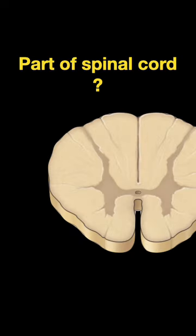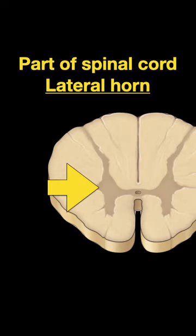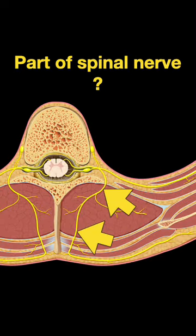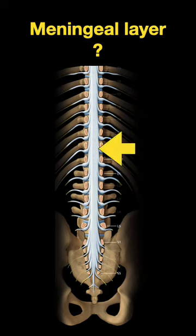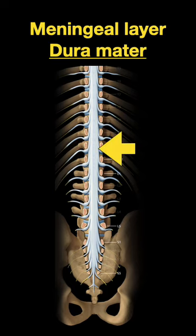How about this one? What part of a spinal cord is that? Lateral horn gray matter. What part of a spinal nerve is that? The dorsal ramus. And what meningeal layer is shown here? That's the dura mater.